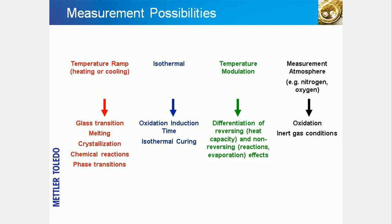DSC measurements can be performed dynamically using a linear temperature ramp, isothermally, or with temperature modulation. Temperature scans are used to investigate temperature-dependent processes such as the glass transition, crystallization, melting, and curing reactions. Isothermal temperature experiments are mainly used to determine the oxidation induction time of materials or to study chemical reactions. Temperature-modulated experiments enable you to separate reversing and non-reversing effects, for example the glass transition from simultaneously occurring reactions or evaporation. Special atmospheres, such as pure oxygen or nitrogen, are often used to accelerate or prevent the decomposition of samples.